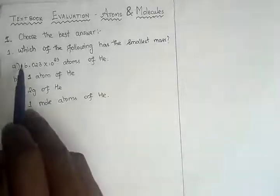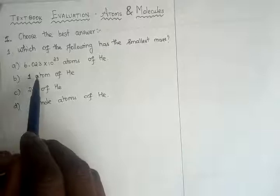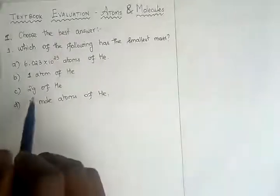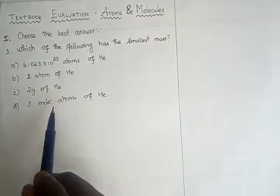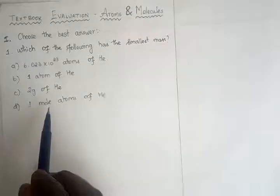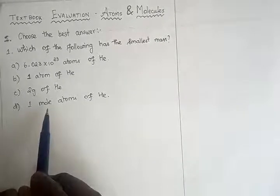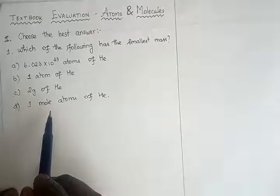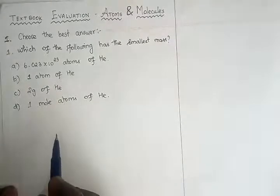The first question in 'Choose the Best Answer' is: which of the following has the smallest mass? The options are: (A) 6.023 × 10²³ atoms of helium, (B) one atom of helium, (C) two grams of helium, and (D) one mole of atoms of helium.